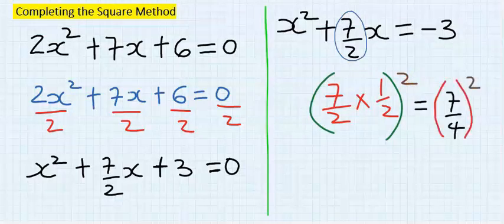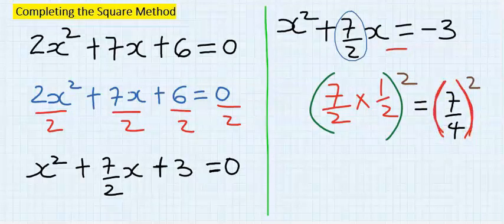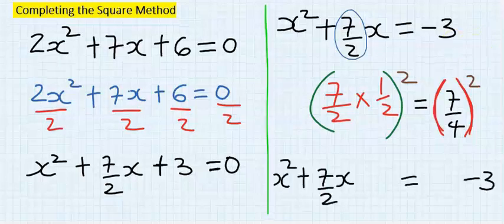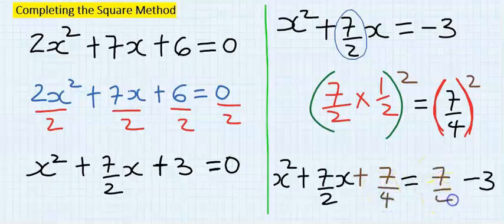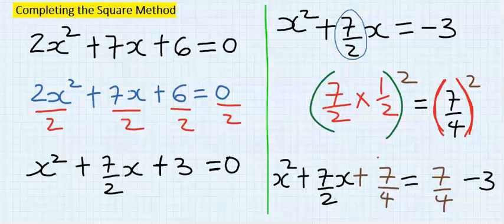Step number four: add the completed square to both sides of the equation. I will add seven over four squared on both sides.